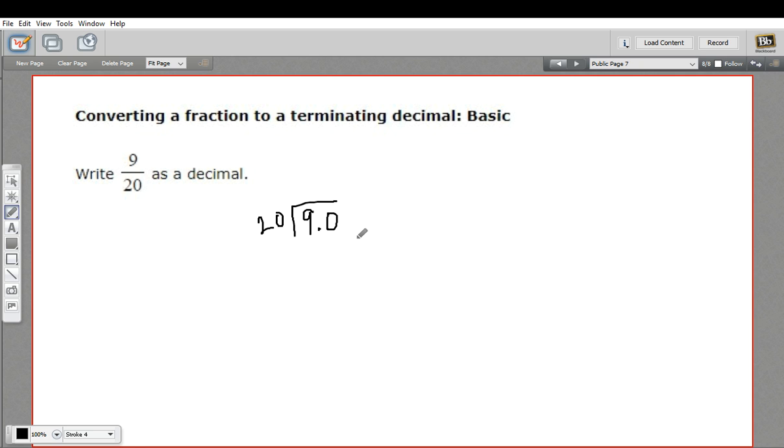So how many 20s go into 90? Well, 20 times 4 would be 80. I think that's good. So we'll do that. And this gets us 10.